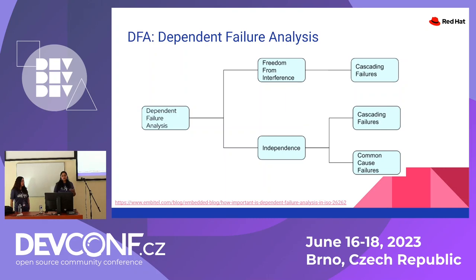So how do we ensure freedom from interference? There is DFA — dependent failure analysis — which covers cascading failures for freedom from interference and also common cause failures, which are related to independence. A common cause failure is due to a common cause that at the same time fails both element A and element B. These failure analyses help us figure out the failure modes that could lead to failures, and we try to mitigate those failures.